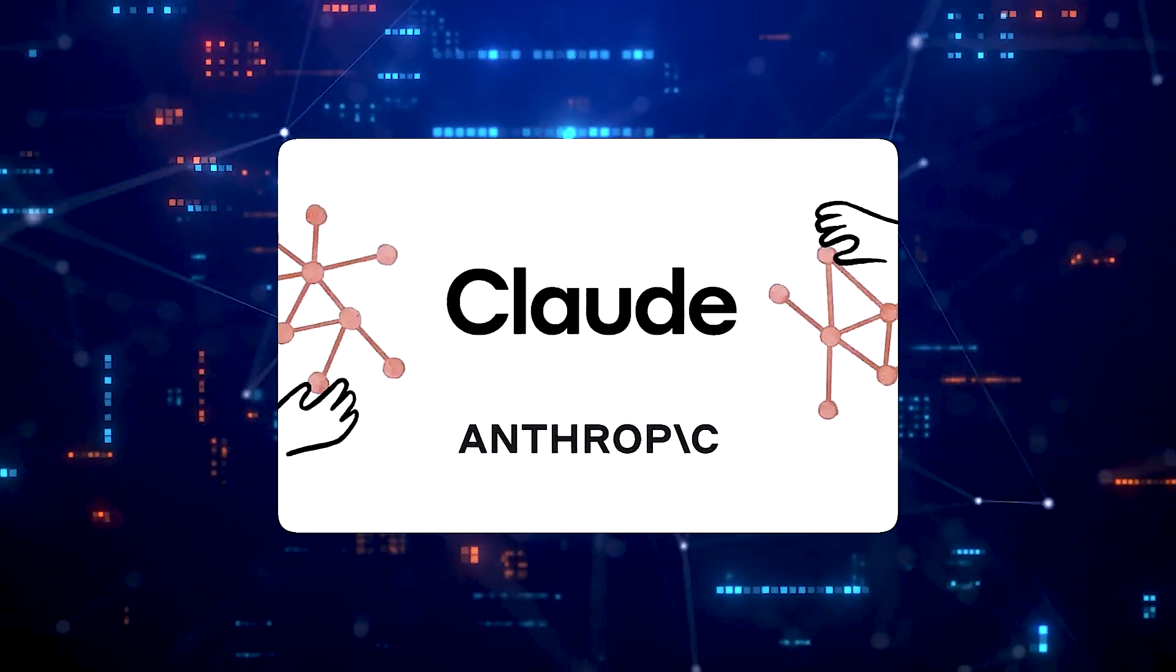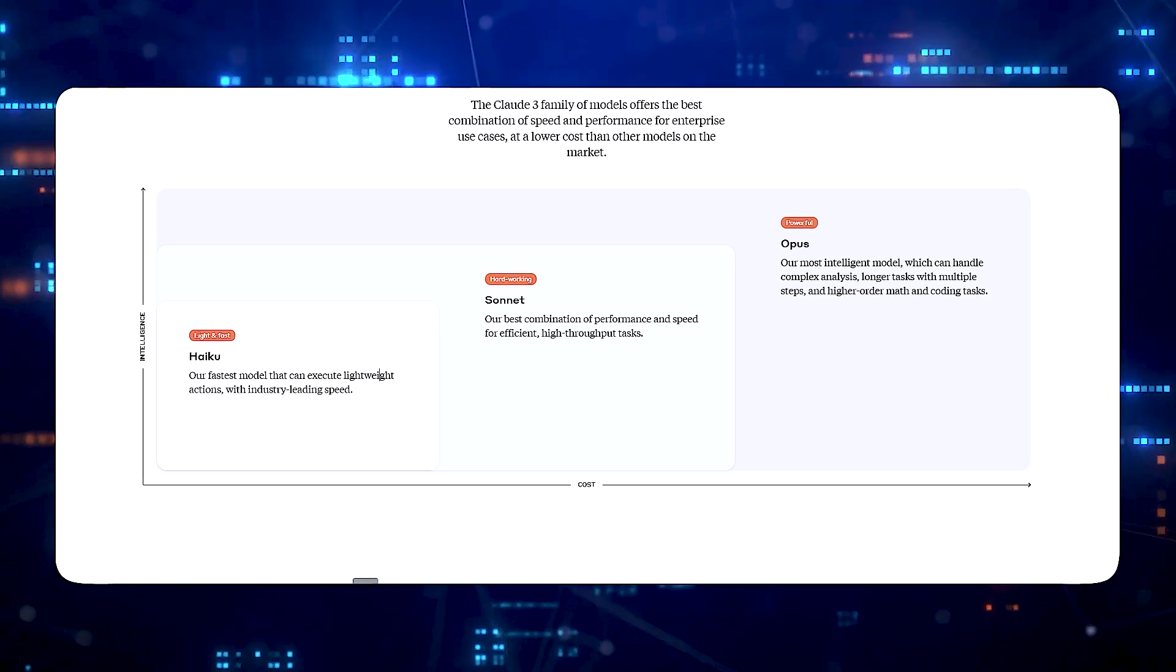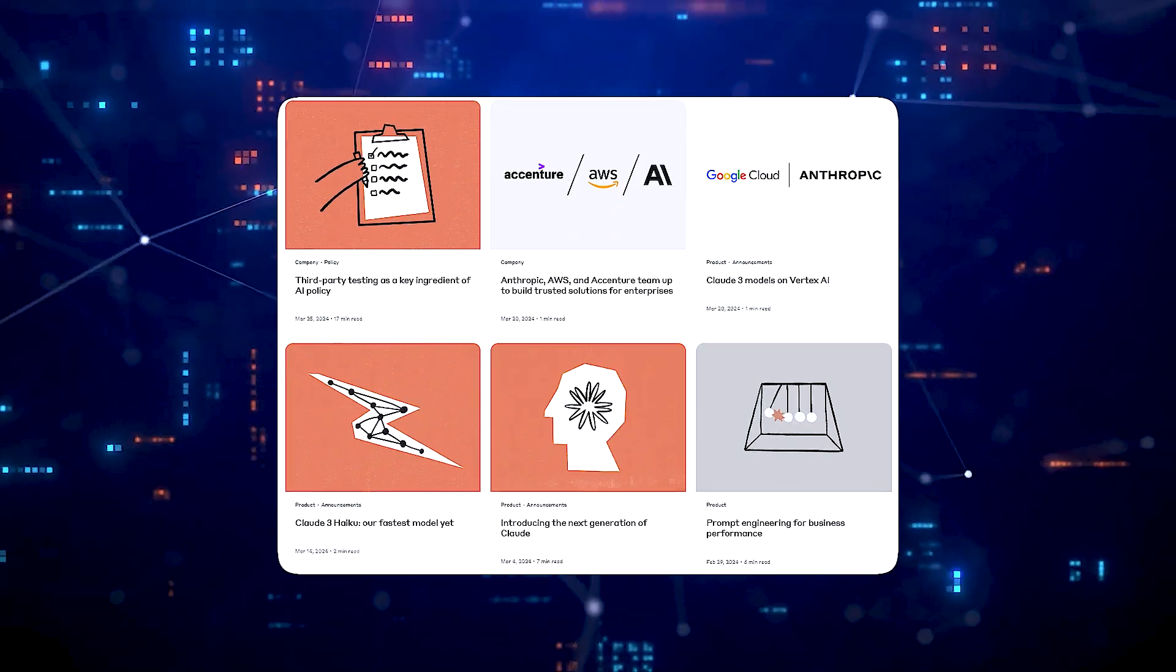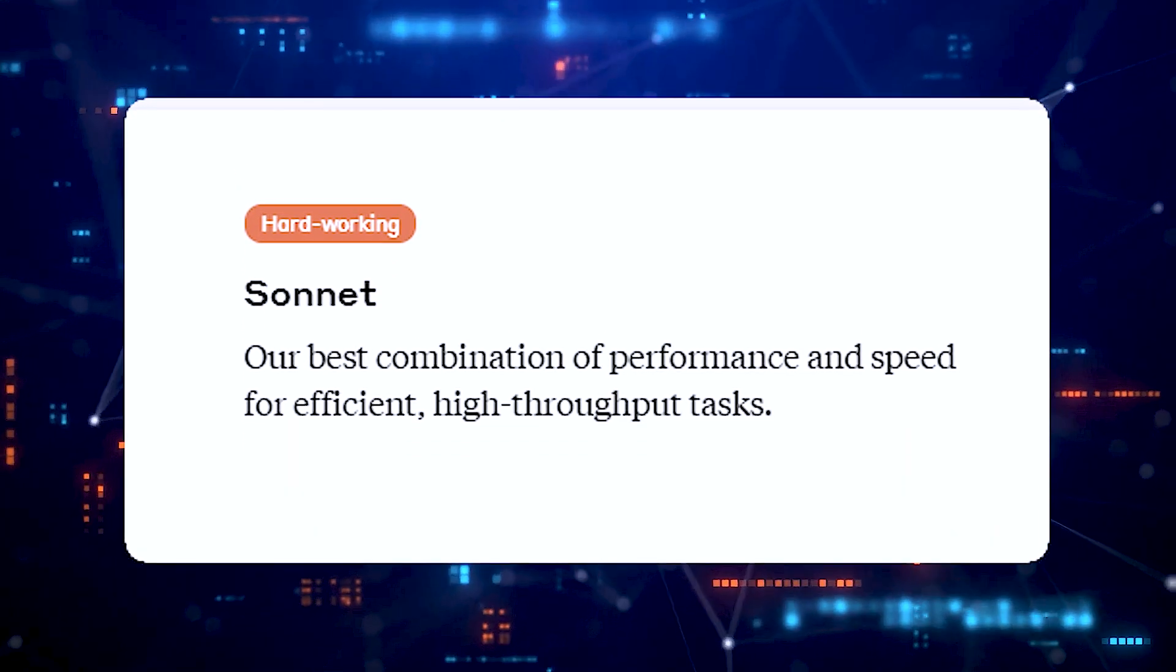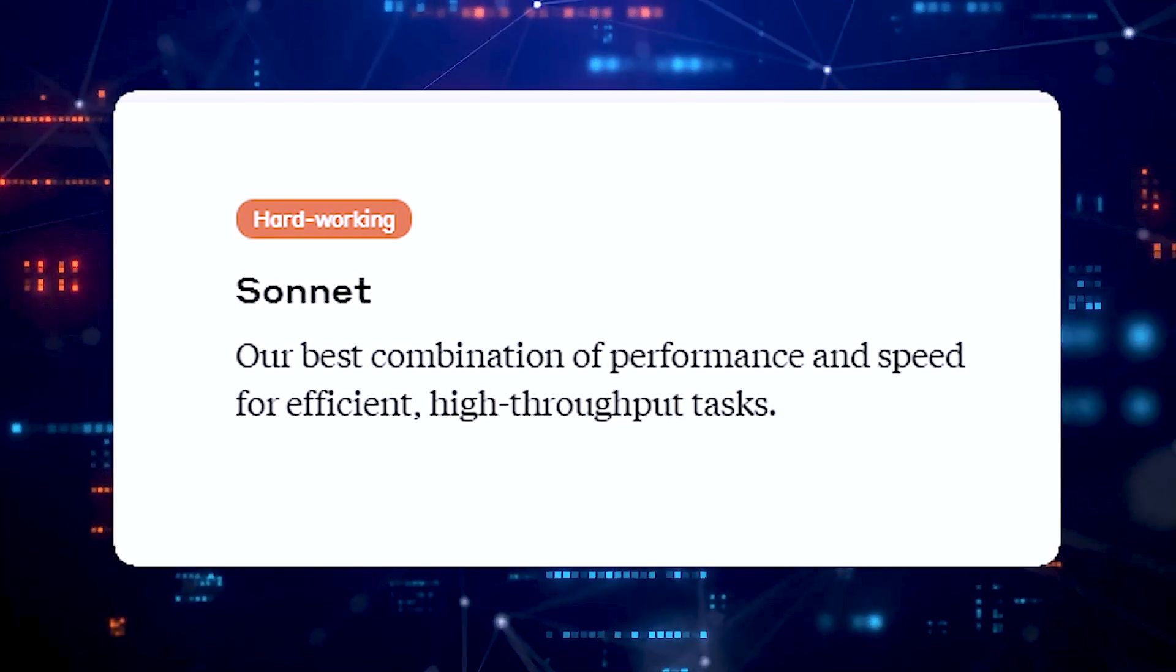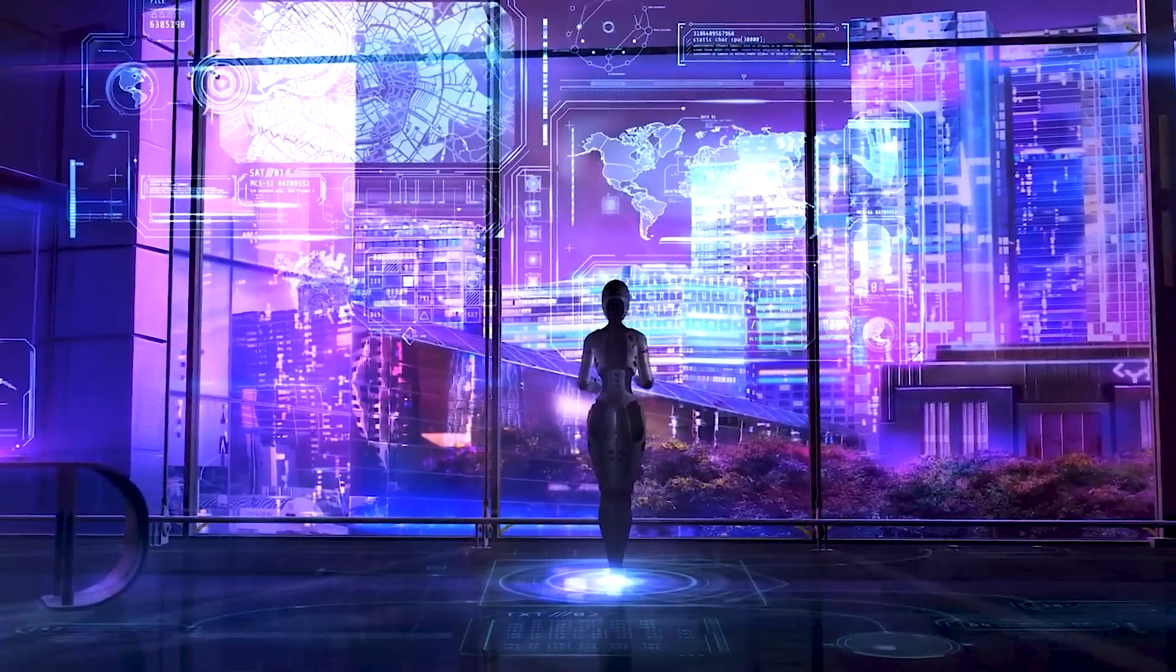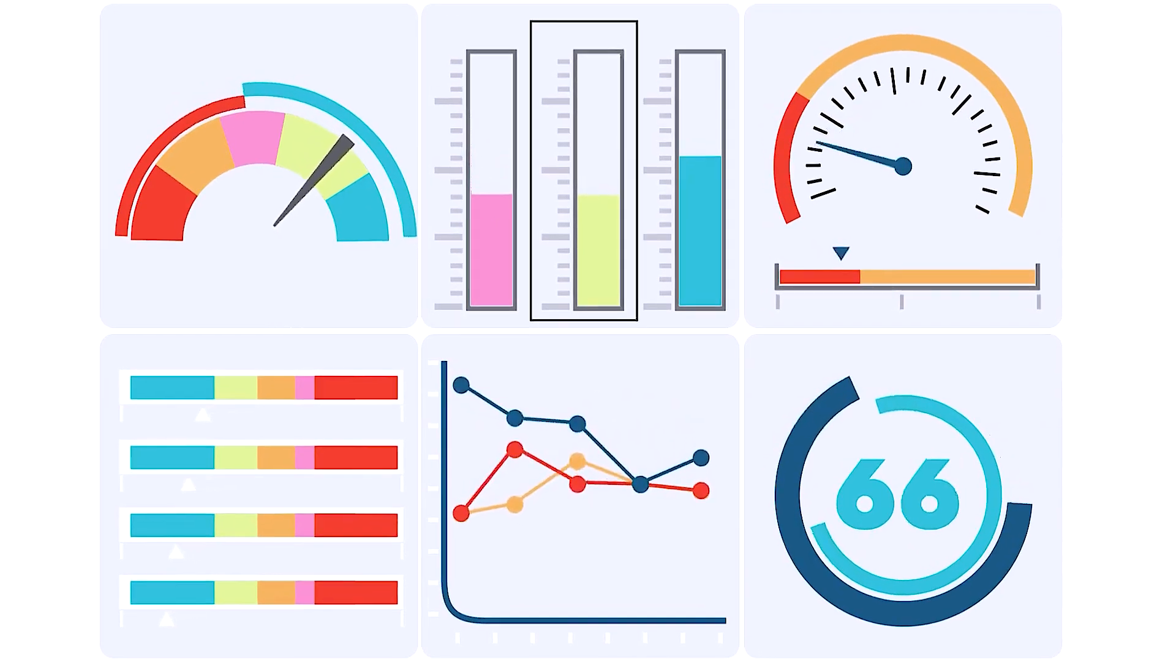What advantages do Claude 3 Sonnet and Haiku offer? While Opus stands as the flagship model, Anthropic's Claude 3 series also introduces two additional models, Sonnet and Haiku, each designed to cater to specific needs and use cases. Claude 3 Sonnet strikes a careful balance between intelligence and speed, making it suitable for large-scale AI deployments that require high endurance and reliability.